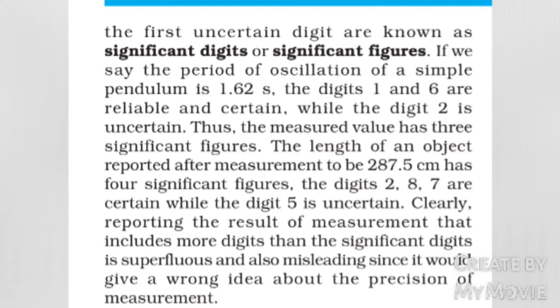The length of an object reported after measurement to be 287.5 cm has four significant figures. The digits 2, 8, 7 are certain while the digit 5 is uncertain. Clearly, reporting the result of measurement that includes more digits than the significant digits is superfluous and also misleading, since it would give a wrong idea about the precision of measurement.